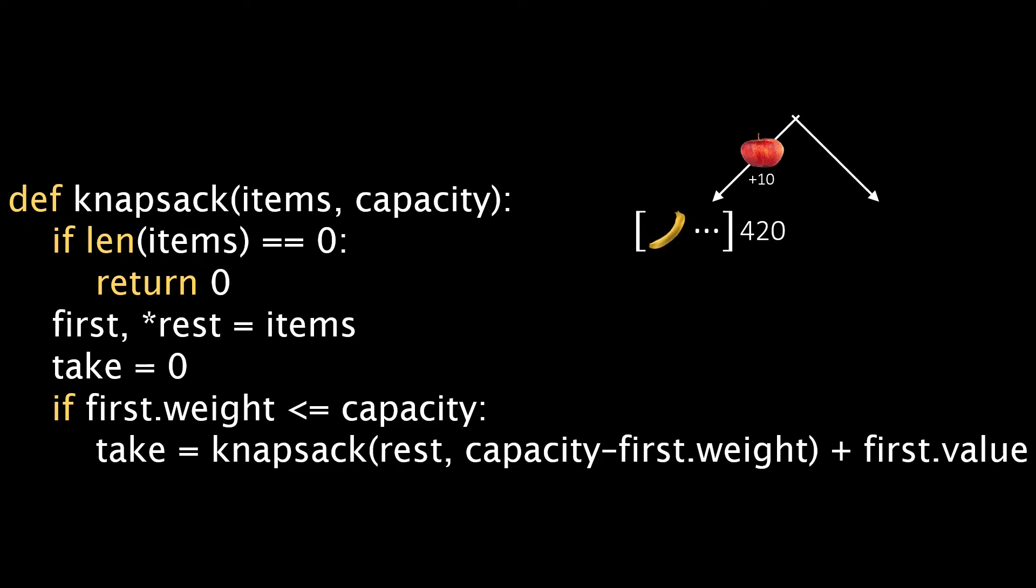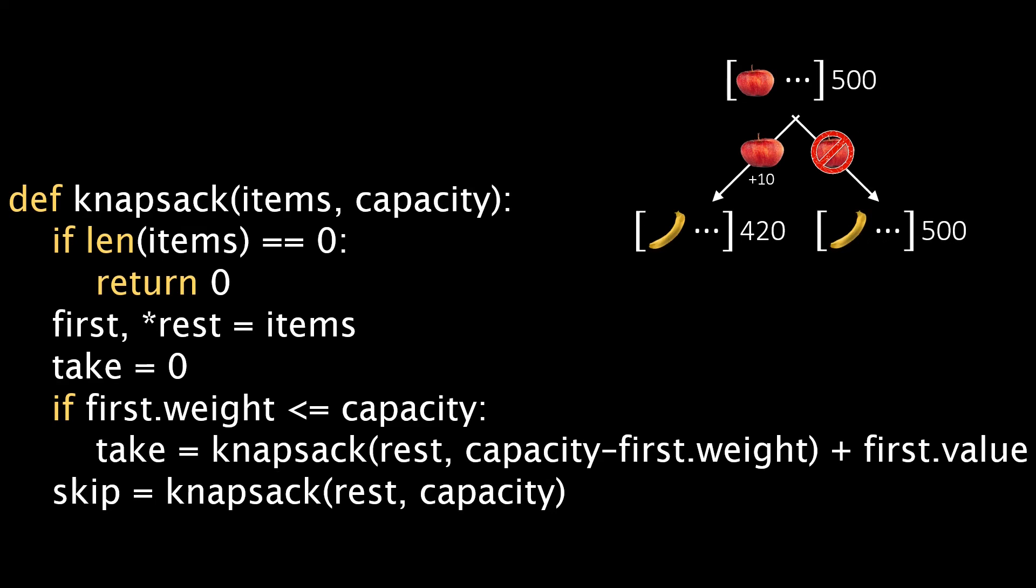The only alternative is to not take the first item. We again call knapsack recursively. This time we do not need to remove anything from the original capacity since we didn't take the first item. In both cases we call knapsack with the same list starting with the banana, which was the second item in our original list. If we take the apple, our remaining capacity drops to 420. Both recursive calls then themselves call the knapsack function again.